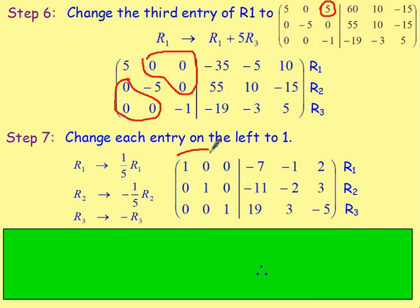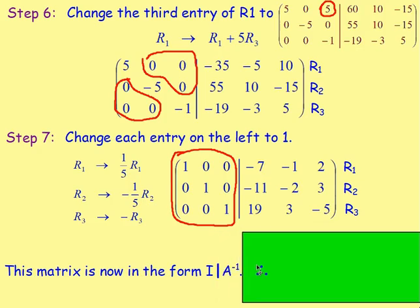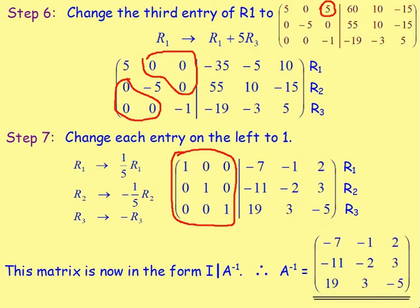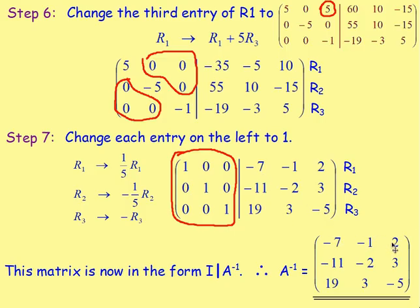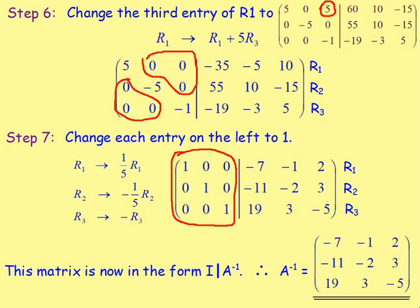After that, you look at the left-hand side and you can see that it is now the identity matrix. So, the matrix is now in the form of the identity matrix, and what you have on the right-hand side is the inverse of matrix A. So, the inverse of matrix A is equal to the matrix with entries negative 7, negative 1, 2, negative 11, negative 2, 3, and 19, 3, negative 5. Well done — that is a worked example. Use that to help you with page 30, working through those examples. Set up your augmented matrix, and then change the left-hand side to your identity matrix. Best of luck!